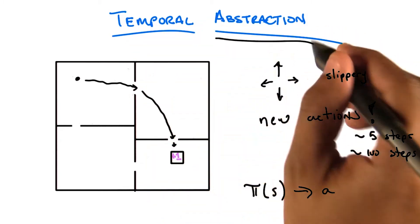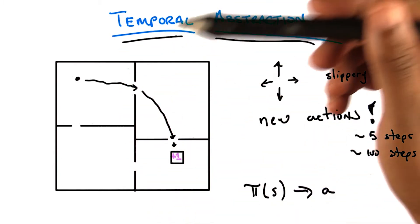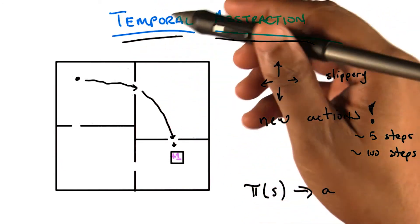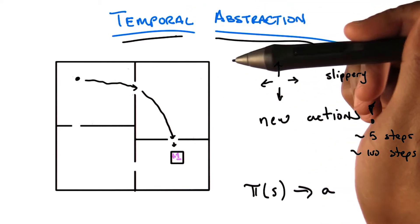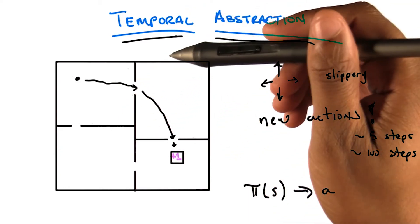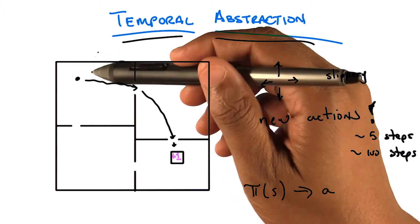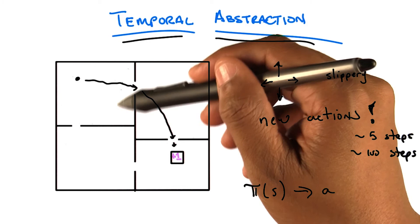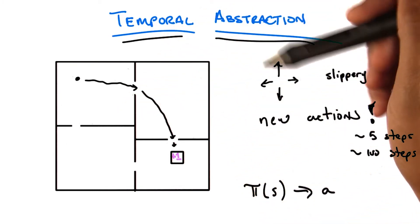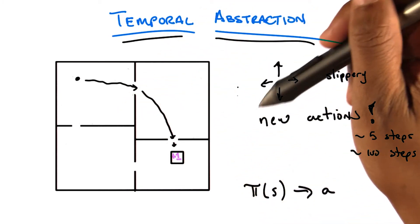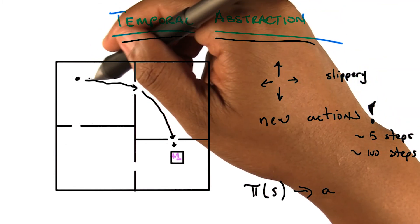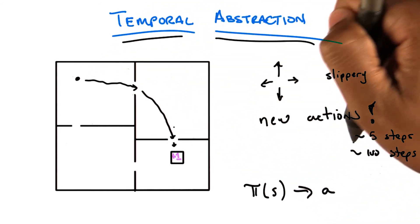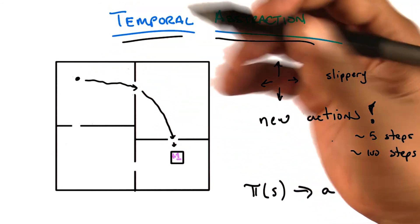And that is where the abstraction comes from and where the temporal nature comes from. One of the things that makes reinforcement learning hard is delayed reward — what's implicit in that is that you have to reason over time, taking many, many steps. Because there are several options at every state, you get an exponential blowup over all the paths you might take. What you've done is trade off the cost of adding new actions with being able to skip over having to make a bunch of decisions along the way. So now you can do in five steps what would have taken 100 steps, and that's a gigantic exponential savings.